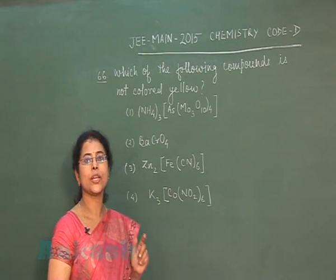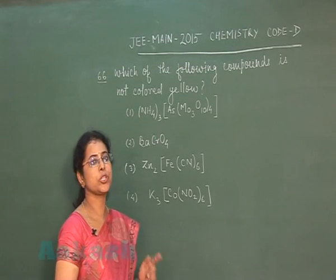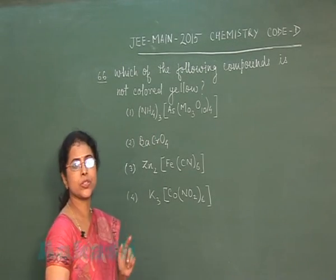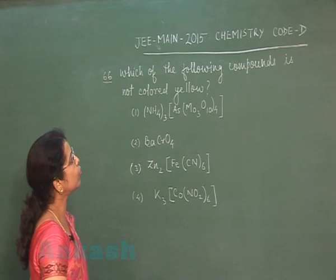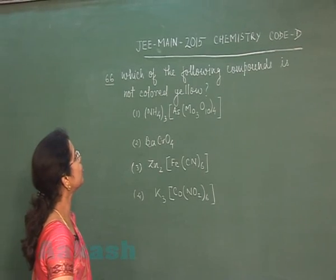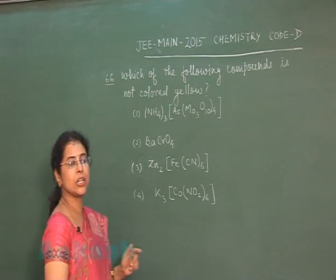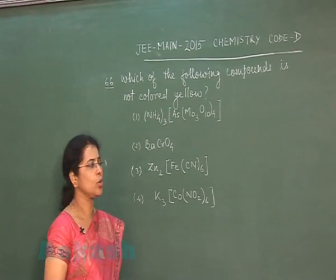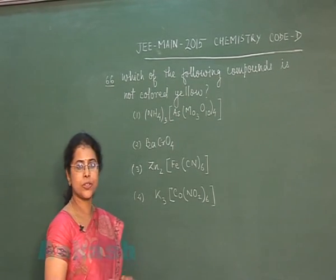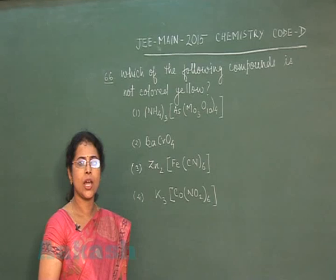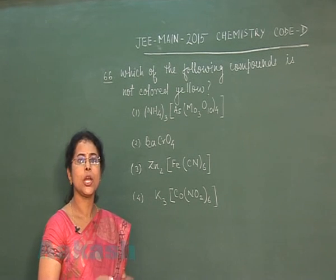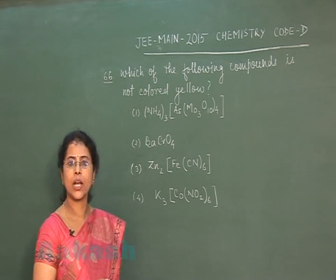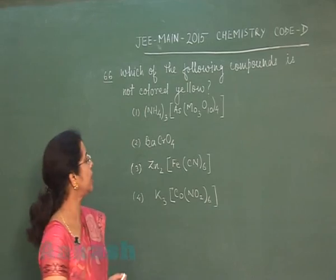Next question is question number 66: Which of the following compound is not colored yellow? Four options are given. We have to identify which one among these four compounds is not yellow colored.